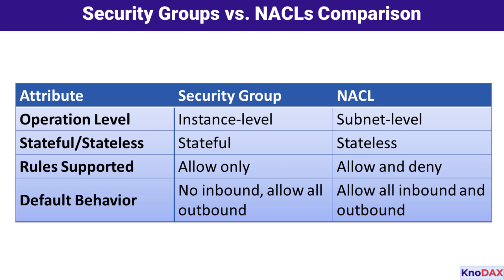Let's wrap up with a quick side-by-side comparison. Security groups are perfect for controlling traffic at the instance level — they're stateful and only support allow rules. NACLs work at the subnet level, are stateless, and support both allow and deny rules. Security groups evaluate all rules simultaneously, while NACLs process rules in priority order. By combining these two, you can secure both individual resources and entire subnets effectively, so remember to use them together for a layered security approach.